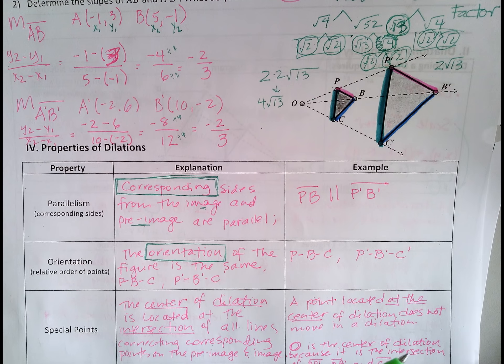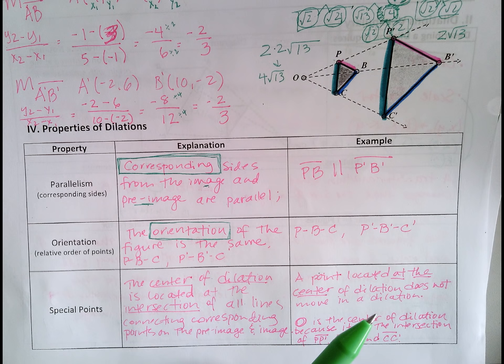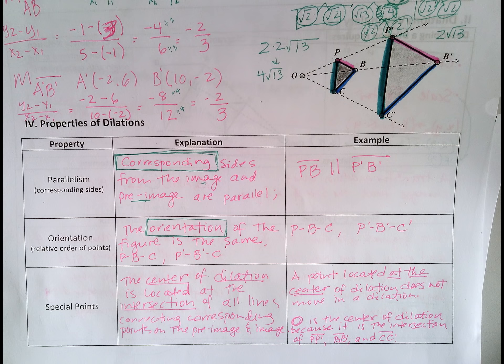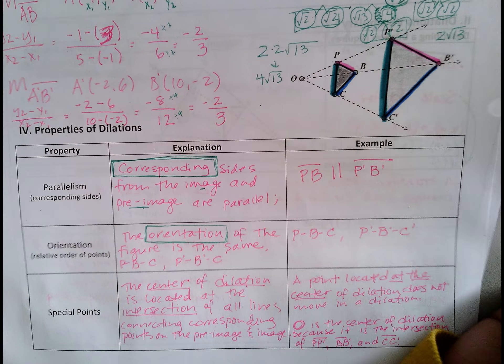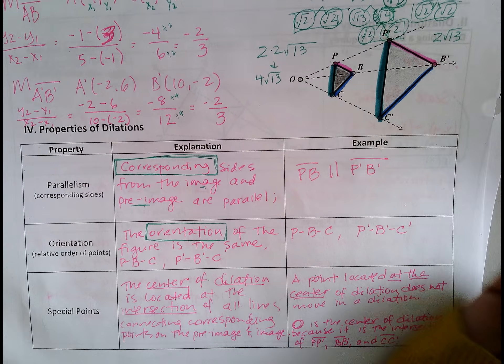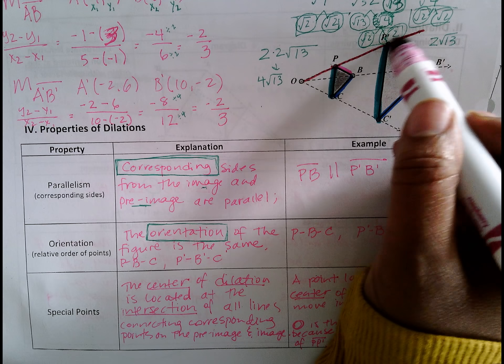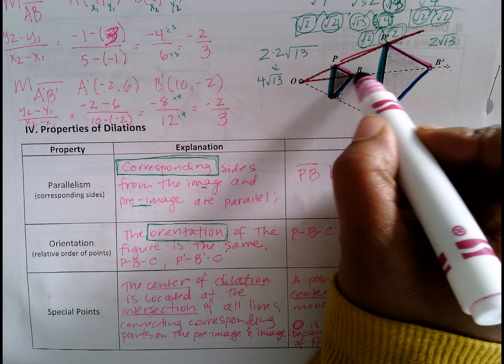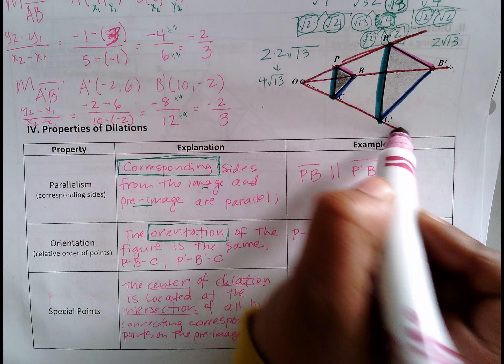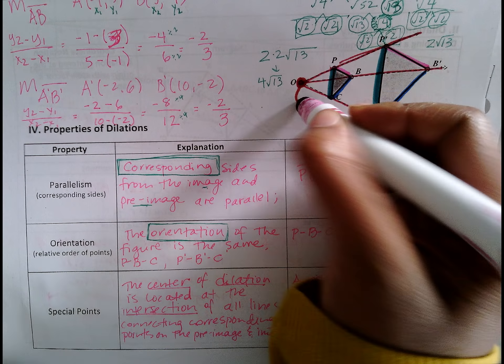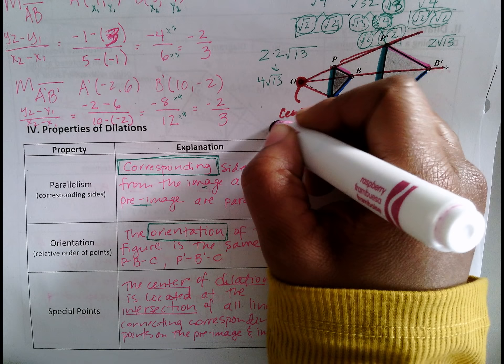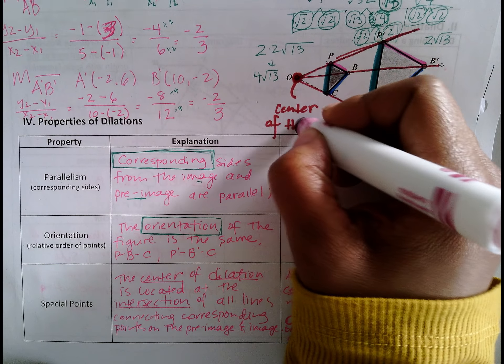Special points. This is a lot. So I'll just read it to you so that you can just quickly jot it down. The center of dilation is located at the intersection of all lines connecting corresponding points on the image and pre-image. Simply put, essentially where the points that connect your corresponding points, these points are corresponding because they're in the same exact place in this triangle. And if we connect them, same thing here. If we connect the corresponding points C and C', this is where they will all converge. This is also known as the center of the dilation.